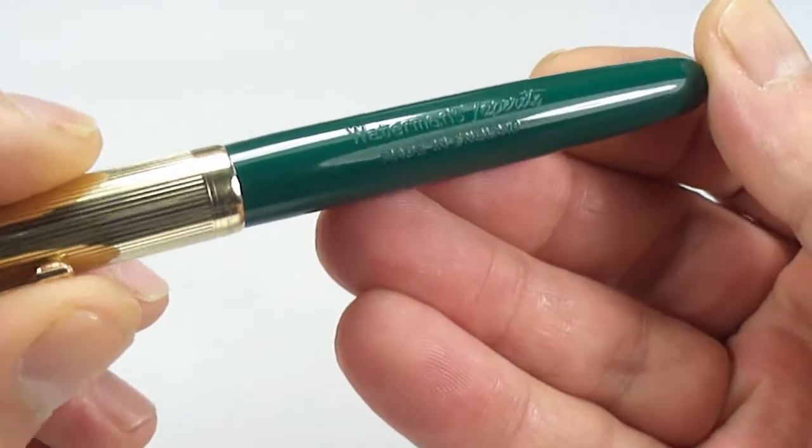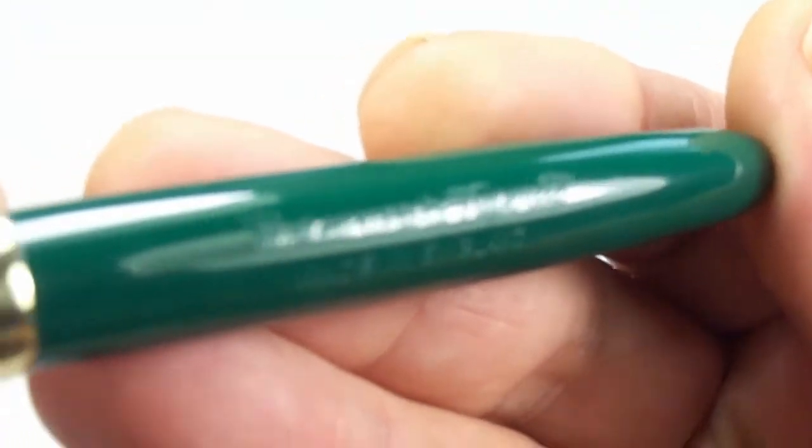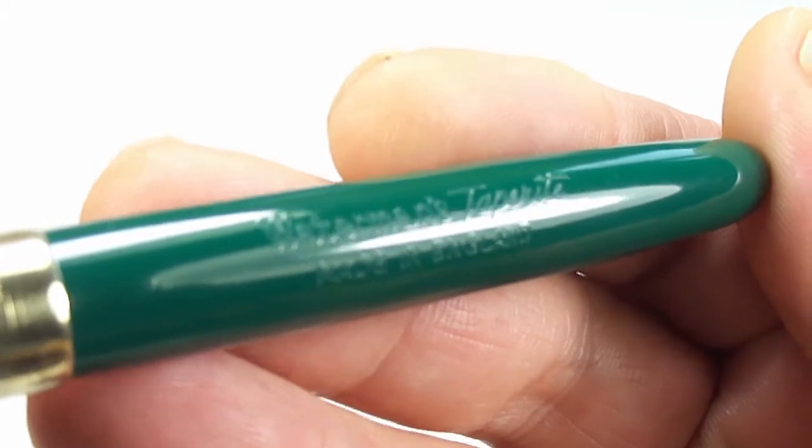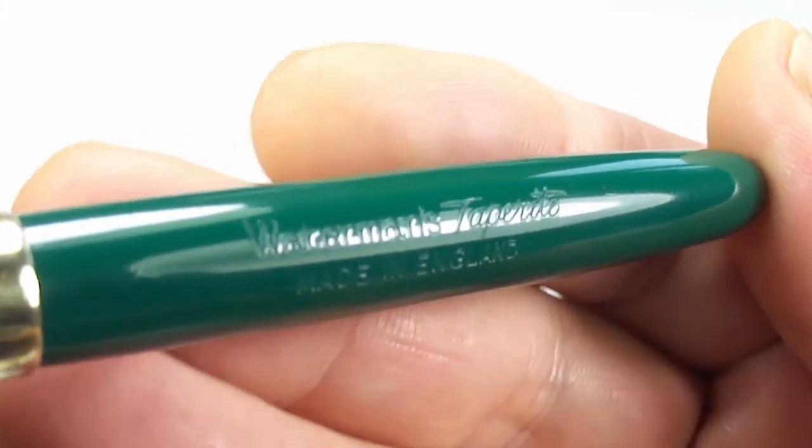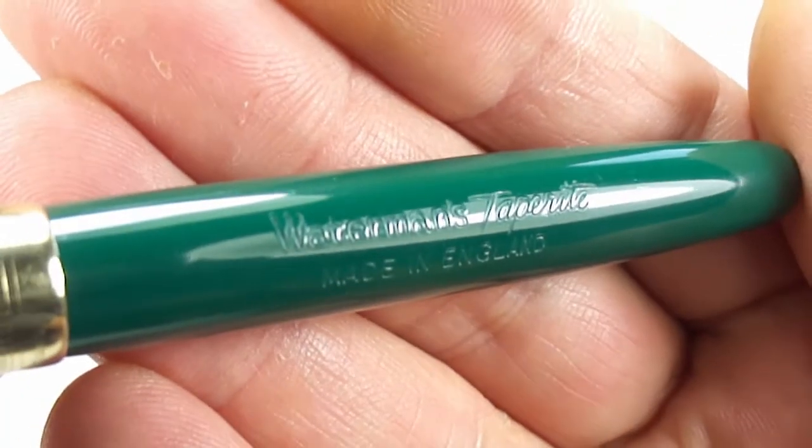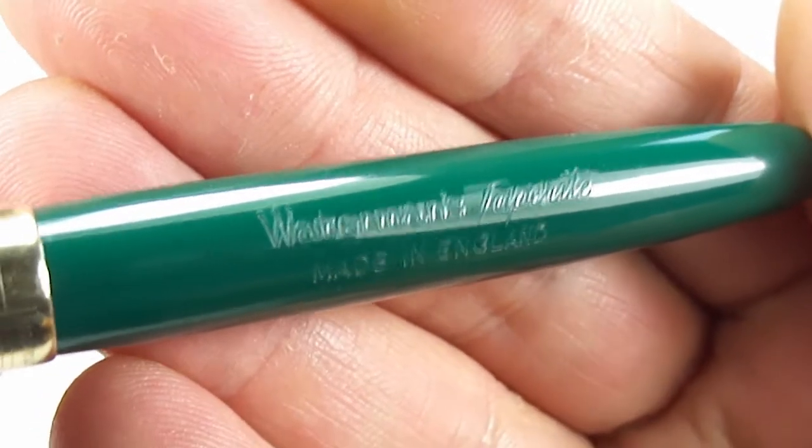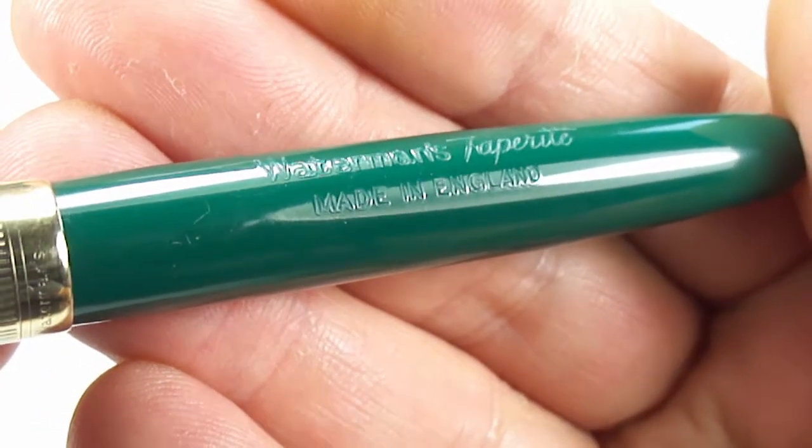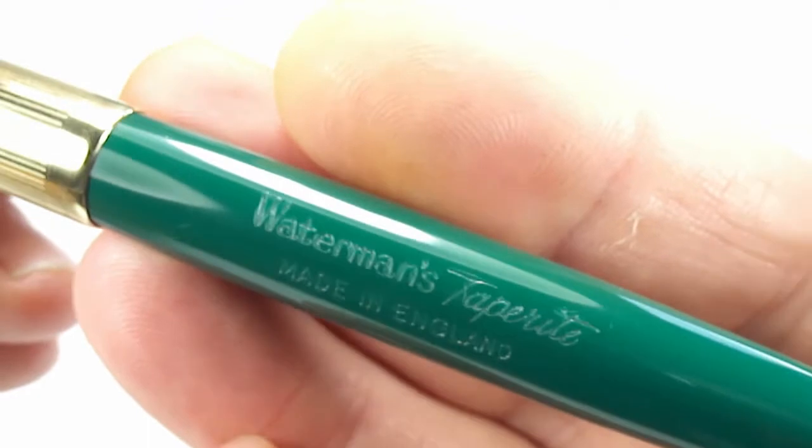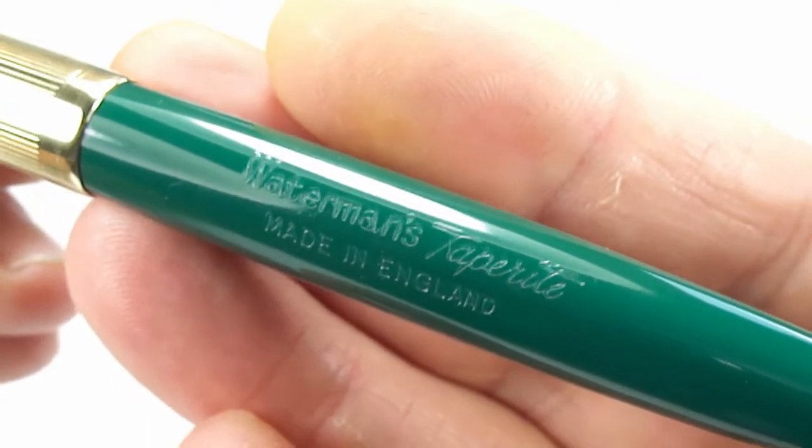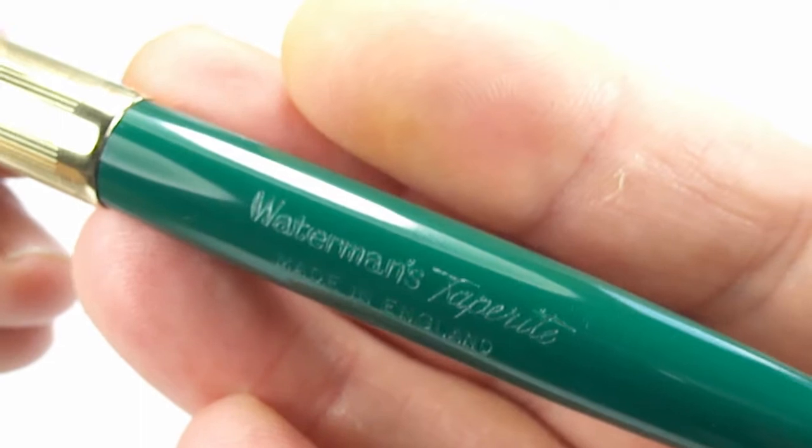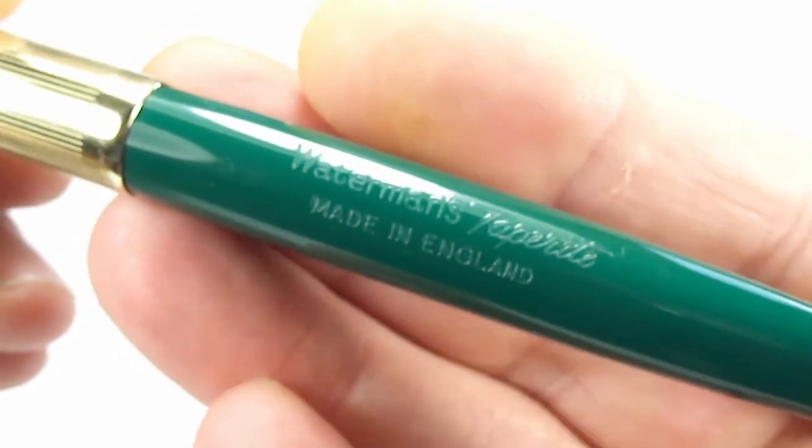One thing I've just not shown you, actually, let's show you the barrel imprint, which again, is lovely and clear. You'll see there, it reads waterman's, taperite, and then underneath, made in England. Let's give you a different angle. So, waterman's taperite, made in England there.